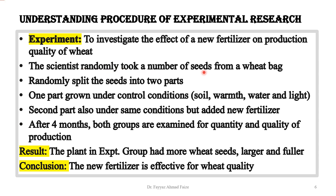The first step is that the scientist randomly took a number of seeds from a wheat bag. He then randomly split the seeds into two parts. One part is grown under the control condition and the second part is also under the same control condition, meaning we provide the same environment to both of them.